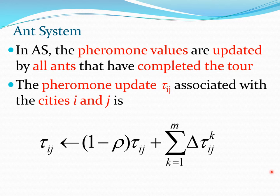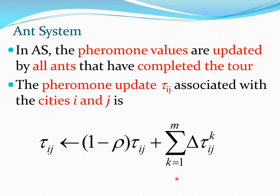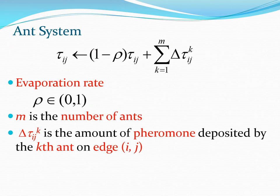The pheromone value tau_ij is changed according to this formula. You can see the (1 - rho) * tau_ij term, and the summation term from k=1 to m of delta_tau_ij_k, where k refers to the ant number and m is the total number of ants. Rho is a number between 0 and 1 which simulates the process of pheromones slowly vanishing from the paths.